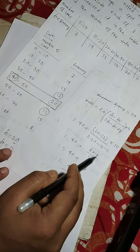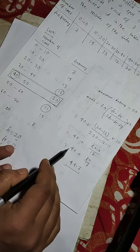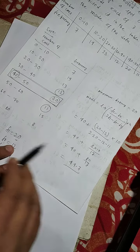So, 40 plus 8 into 10 by 17. So, 40 plus 80 by 17. So, 44.7 is the answer.